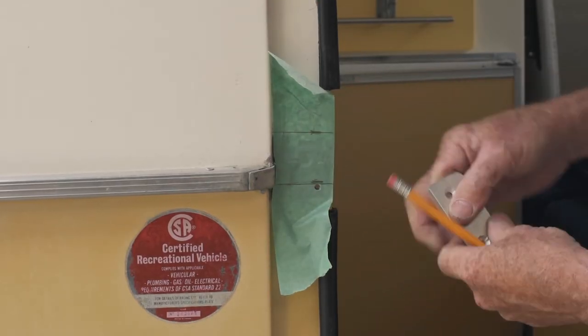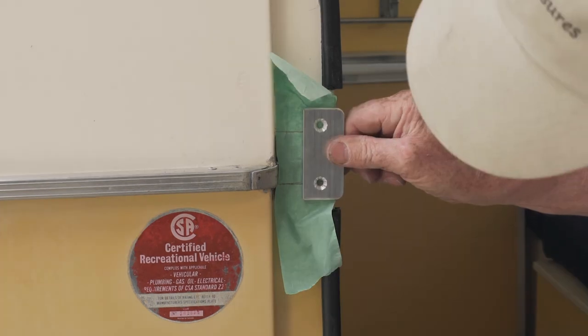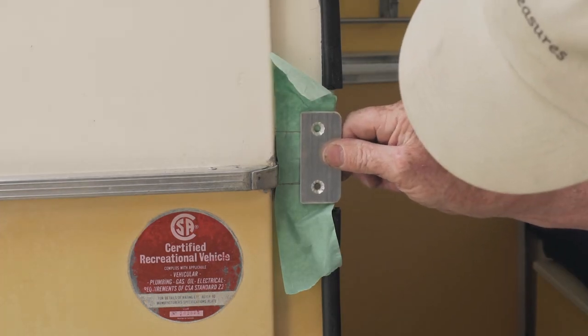Install the flat aluminum latch plate on the outside of the door jamb by centering it with the latch bolts.